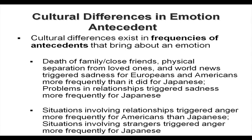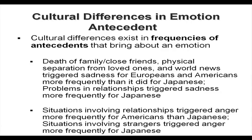So these are some of the cultural differences in emotions — what we call the antecedents. What are those cultural differences that exist in frequencies or antecedents that bring about emotions? For example, the death of a loved one or separation from family triggered sadness for Europeans and Americans more frequently than it did for Japanese, showing how different cultural groups experience the degree of emotional impact differently.